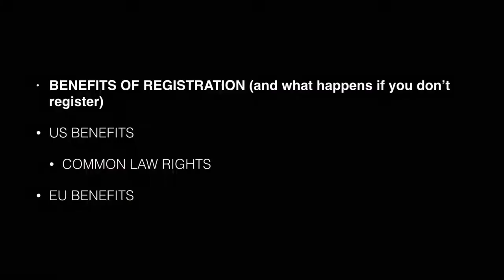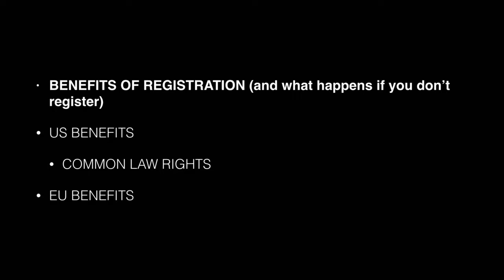Quickly going over the benefits of registration — if you can register, go for it, it's quite cheap. In the US you get nationwide priority, so even though you're not using in every single state, you still get protection in all 50 states. It's proof of validity — if you want to enforce your mark, all you have to do is show you have a registration. Versus common law rights: in the US you still have rights in your trademark if you don't register it. The TM symbol may designate a common law right, while the ® symbol designates that it's actually registered. But common law rights are much more limited. For example, if you're a brick-and-mortar store in San Francisco, you're only going to have rights in San Francisco — the rights are limited to where you actually use.